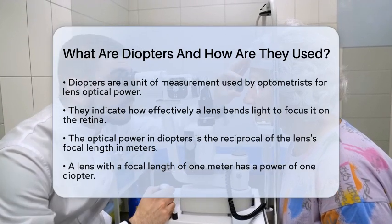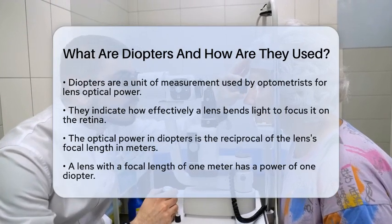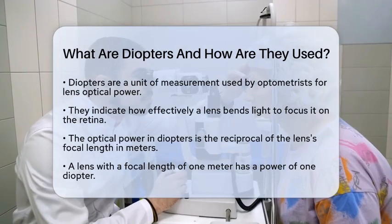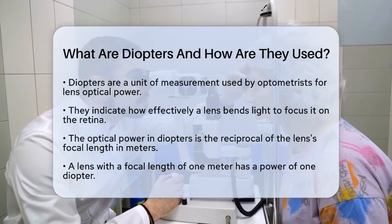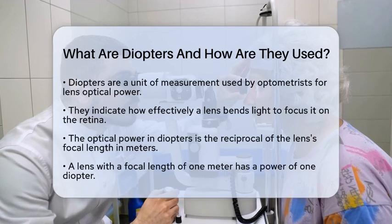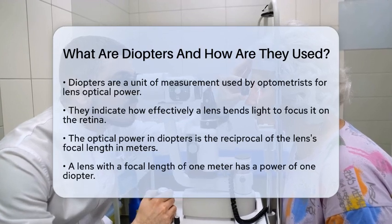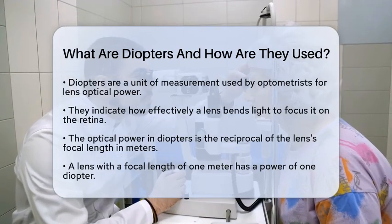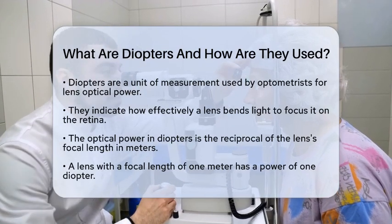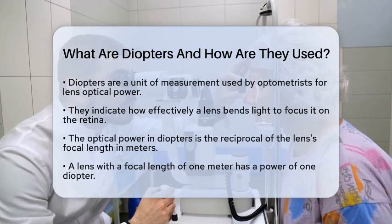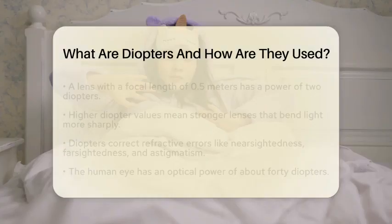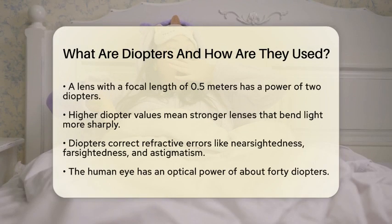Diopters are a unit of measurement that optometrists use to express the optical power of lenses. This power indicates how strong a lens is in bending light to focus it correctly on the retina. The optical power in diopters is defined as the reciprocal of the lens's focal length measured in meters. For instance, if a lens has a focal length of one meter, it has a power of one diopter.